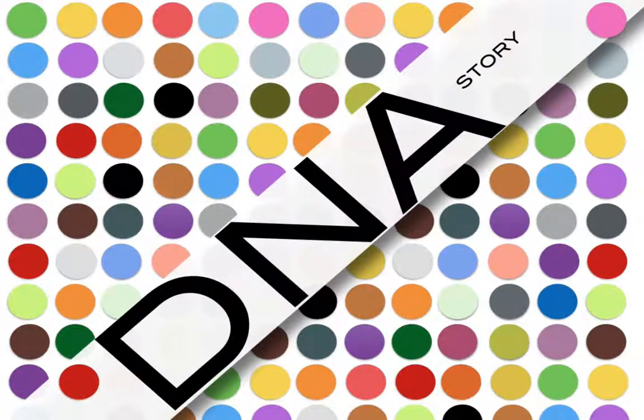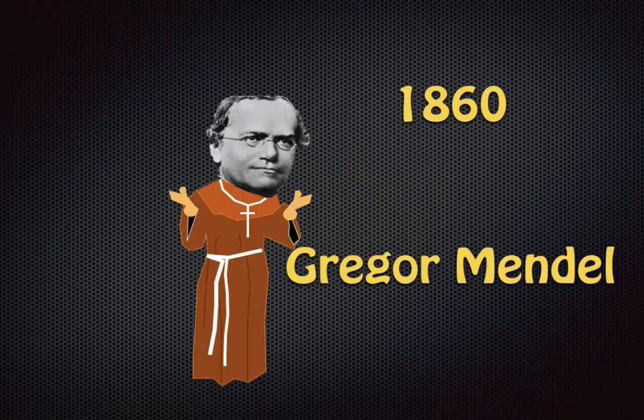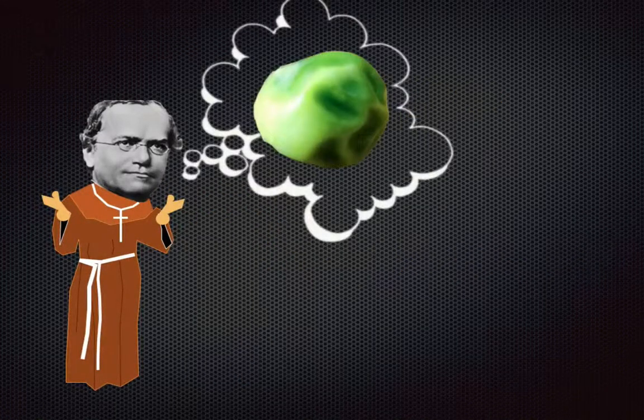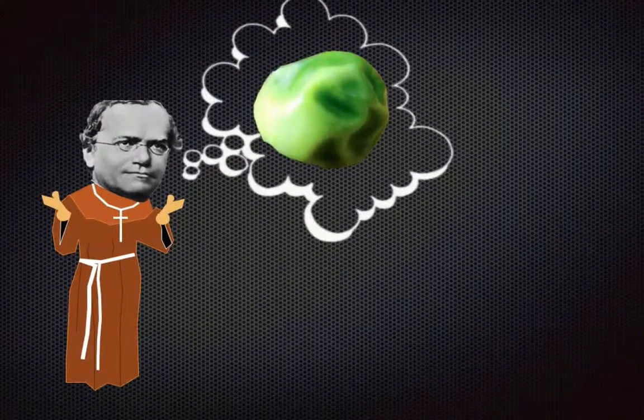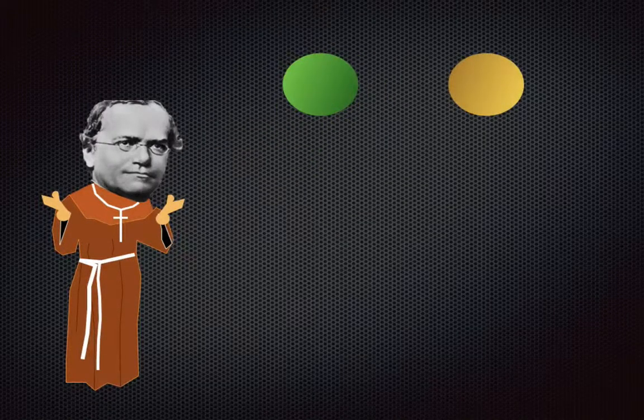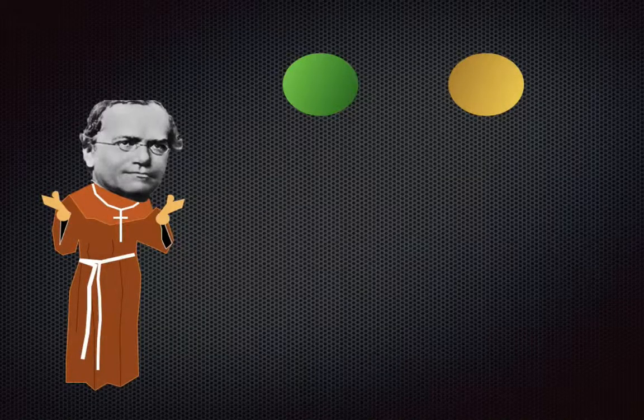To start this story, we need to go back to the 1860s to a humble monk named Gregor Mendel. Gregor Mendel had a passion for studying peas. He was a scientist who lived in a monastery. He studied peas, he grew peas, and he found something pretty interesting when he grew peas.